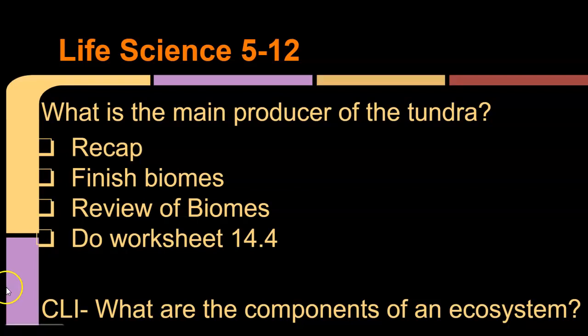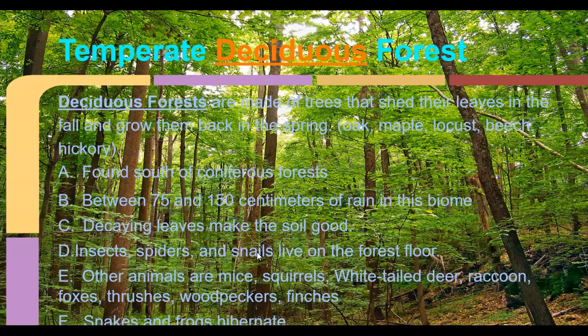We have a couple of biomes left to do. We have finished the terrestrial biomes and then we'll do the three aquatic biomes. Review 14.4 is your homework. My favorite — it's where we live — the temperate deciduous forest. The temperate deciduous forests are made of trees that shed their leaves in the fall and then grow back in the spring.